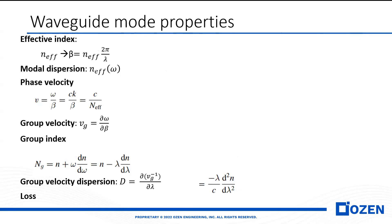So what are the waveguide mode properties? We have effective index, modal dispersion, phase velocity, group velocity, group index, group velocity dispersion, and loss.